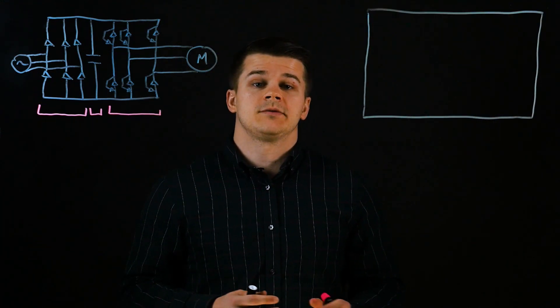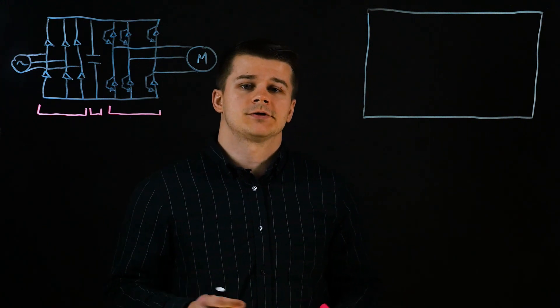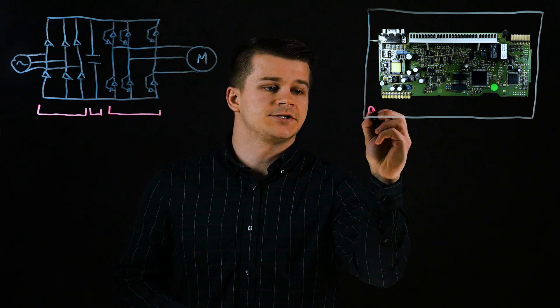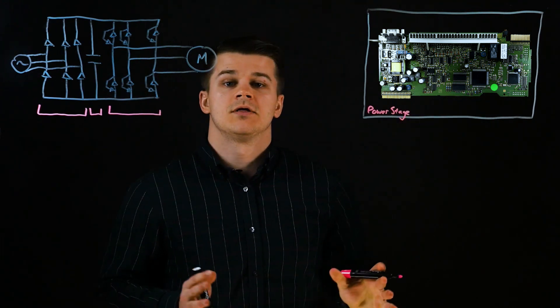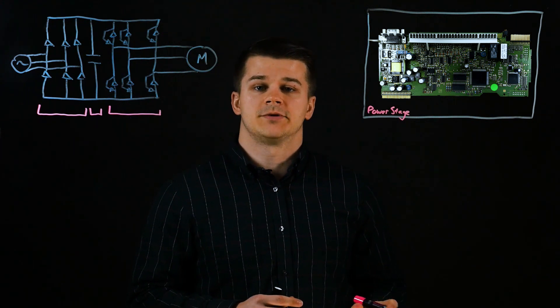The control circuit of KEB's F5 VFD is handled by the control card. Now this is a little bit too hard to draw so we're just going to point out the main components. First is the power stage connection. This connects to the drive's internal power stage to tell it when and how much to output to the motor.